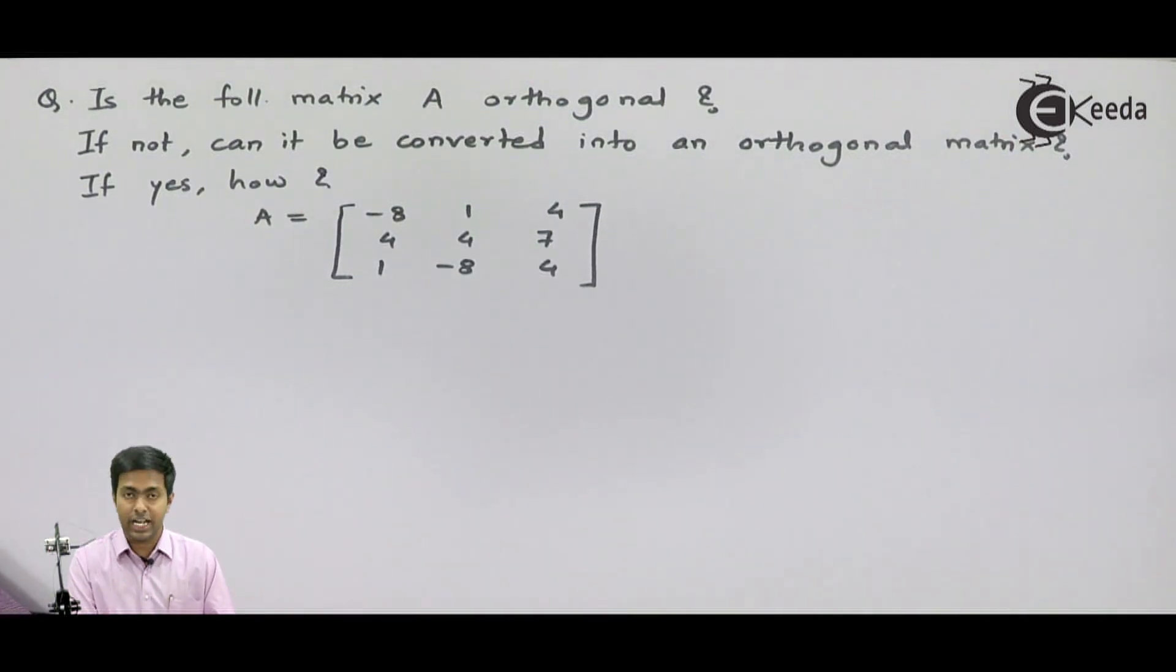It's really a crazy question. Let's start with the first question: is the following matrix A orthogonal? We all know the condition for an orthogonal matrix. If we can prove that A into A dash is equal to the identity matrix, then we will say yes, A is orthogonal. But if we won't get A into A dash equals I, then definitely we will move to the second question and check whether we can convert it into orthogonal and write down the answer. Let's start with the first question.